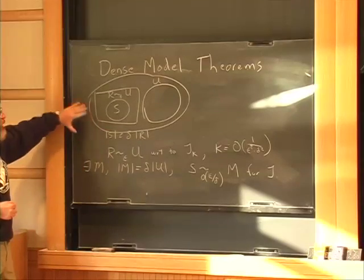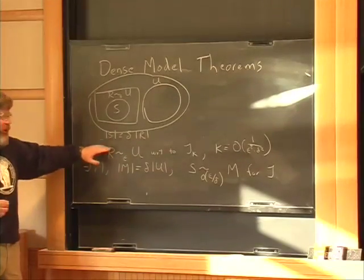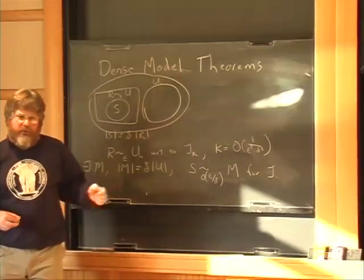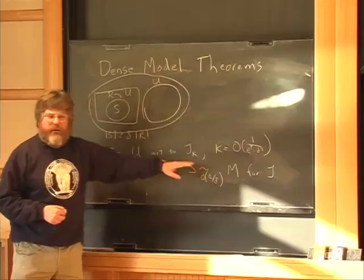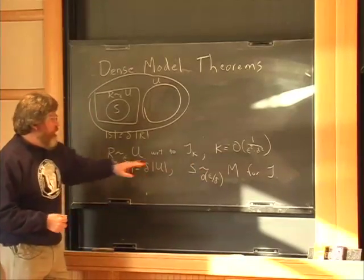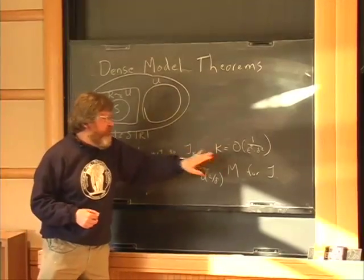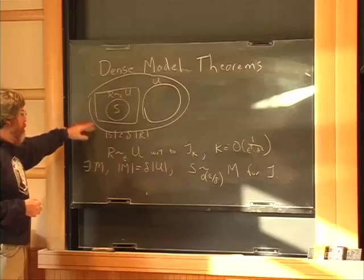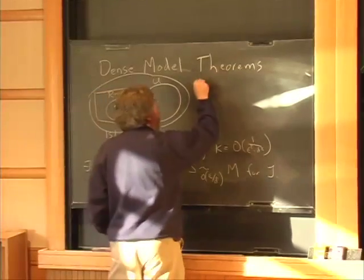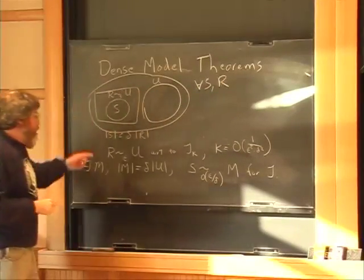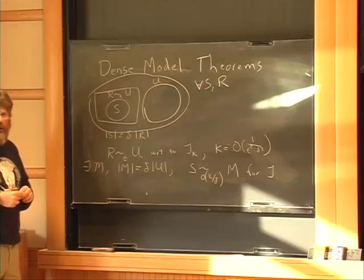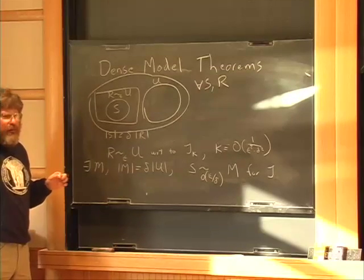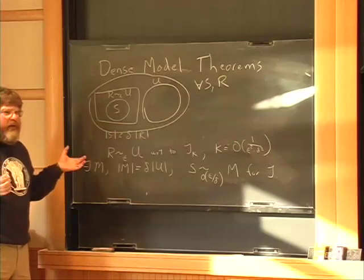So this is a theorem. There are other versions with different trade-offs between parameters—k might have a slightly different value as a function of epsilon or delta, you might lose a little bit less in indistinguishability, or there's a slightly different relationship between the two classes of tests. This is true for every S, for every R, for every set U, and for every class of predicates tau.